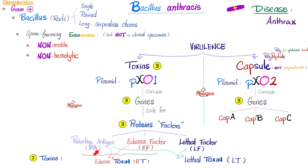Protective antigen is very important — it's like the middleman. Last time you wanted to buy a pair of jeans, did you go to the factory or to the store? You went to the store — it's more convenient, faster, they give refunds, and have variety. The store is the middleman between the factory and you. Similarly, the protective antigen is the middleman. Whether you're the edema factor or the lethal factor, you will need the protective antigen.